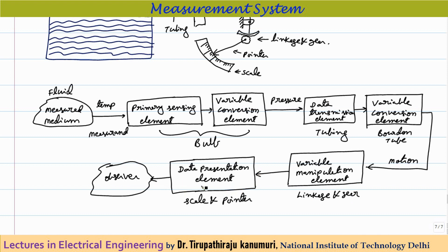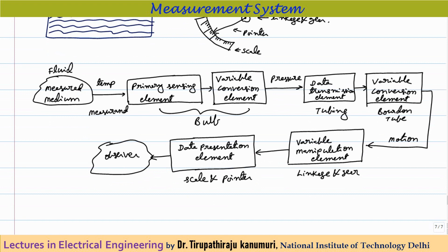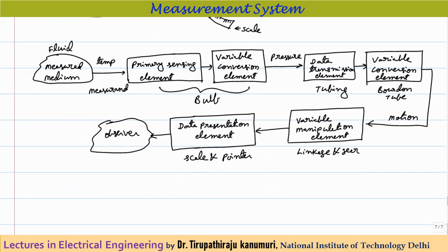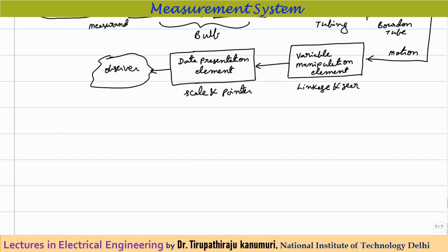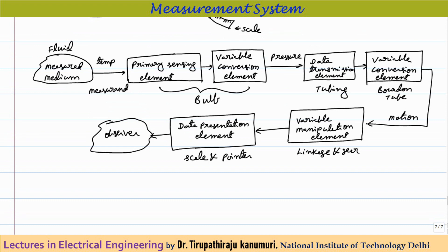Different blocks are combined depending on the application to make up a complete measurement system. I hope the basic concept of measurement systems is clear. In the next class we will discuss different types of errors. If you have any queries, please leave them in the comments below. Thank you.